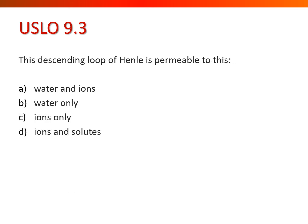The descending loop of Henle is permeable to what? The descending loop is the thin loop and things should pass through easily. The descending and ascending loops are permeable to different things, and the descending loop is permeable only to water.